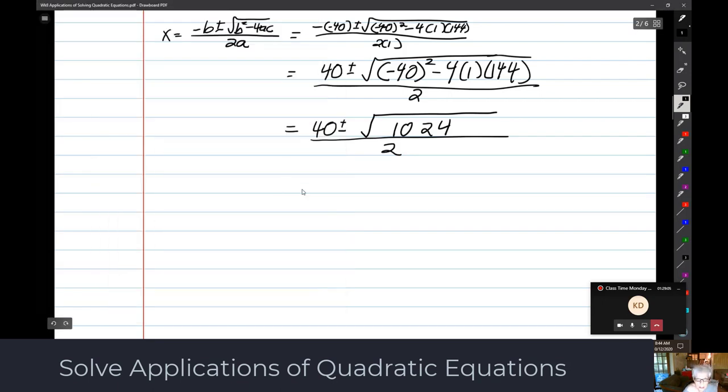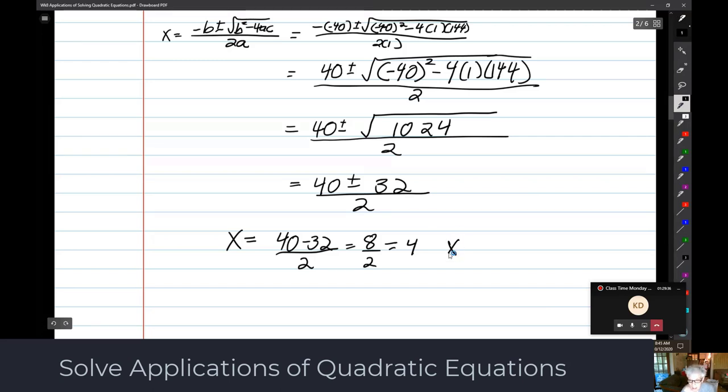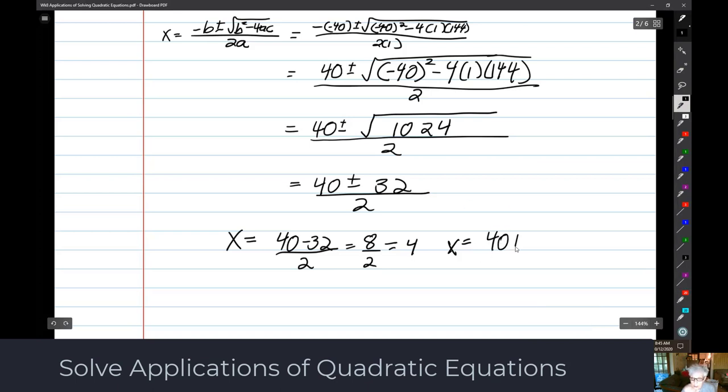So this is going to be 40 plus or minus 32 over 2. So x, the side of the little square, is going to equal 40 minus 32 over 2, which is 8 over 2, which is 4. Or x equals 40 plus 32 over 2, which is 72 over 2, which is 36.